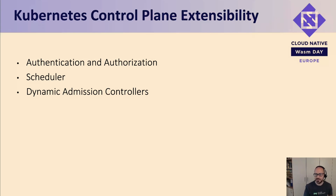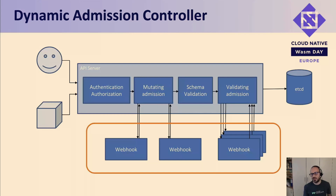Kubernetes has some admission controllers built into its own binaries — think about pod security. But if you want to implement new rules, you have to resort to dynamic admission controllers. They work by using external webhook servers approached by the Kubernetes API server, which sends requests to be evaluated. The webhook servers respond back with an outcome: accept, reject, or accept with changes — a mutating admission controller.